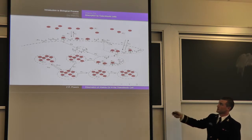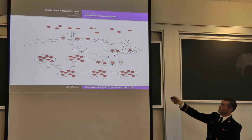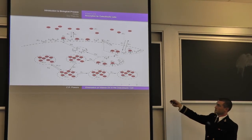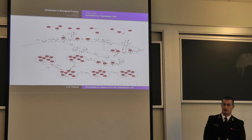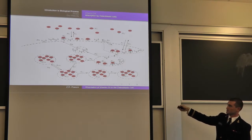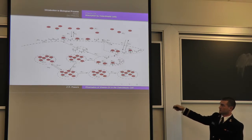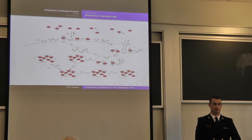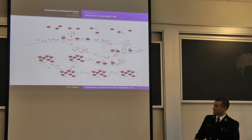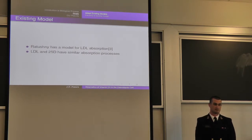There are receptors in both areas, and the D-binding protein can interact with receptors in both areas. Once it interacts with receptors in the buffer area, those buffers will turn into a coated pit, and then the coated pit will invaginate into the cell into what's called a coated vesicle, then goes through various endosomes as it gets moved through the cell. Rattushinib's model was for low-density lipoprotein, which has a similar absorption process to 25D, so we felt comfortable using this model and adapting it to our process.